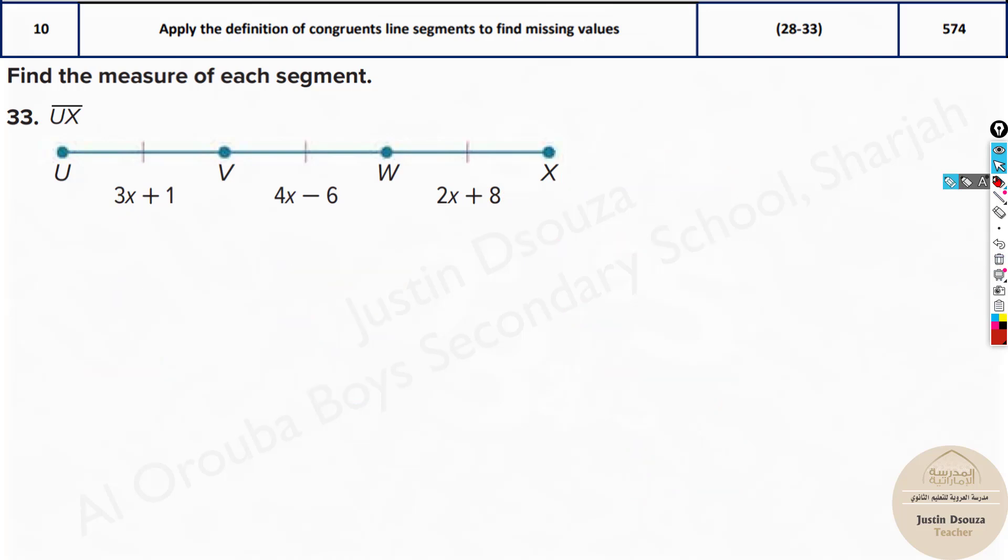Lastly we have this problem here where we need to find U to X. That's the total length needs to be solved. First let's equate and solve the X value. 3X plus 1 equals 4X minus 6. How do you find X? 3X goes to the other side. It will be 4X minus 3X minus 6 to the other side. 6 plus 1. 7 is equal to 4 minus 3 is 1. So 7 equals X.